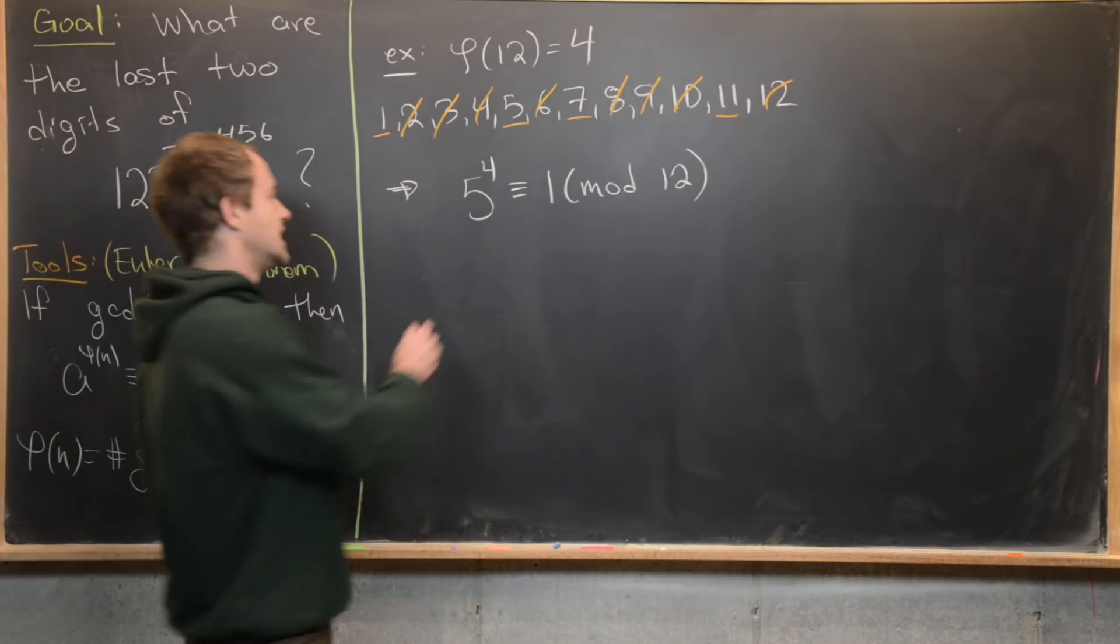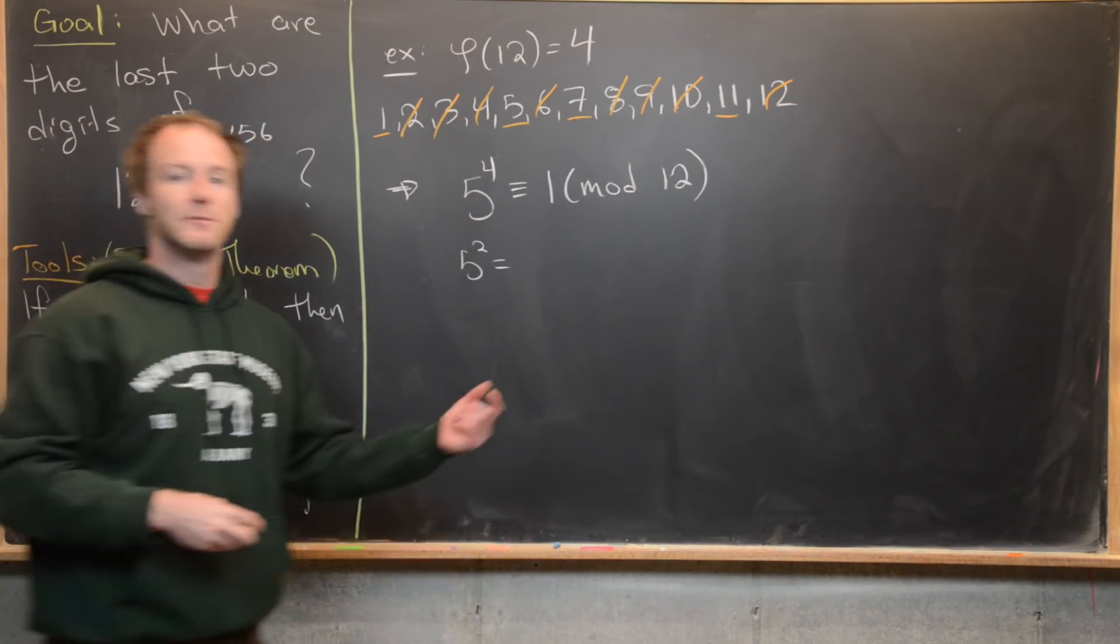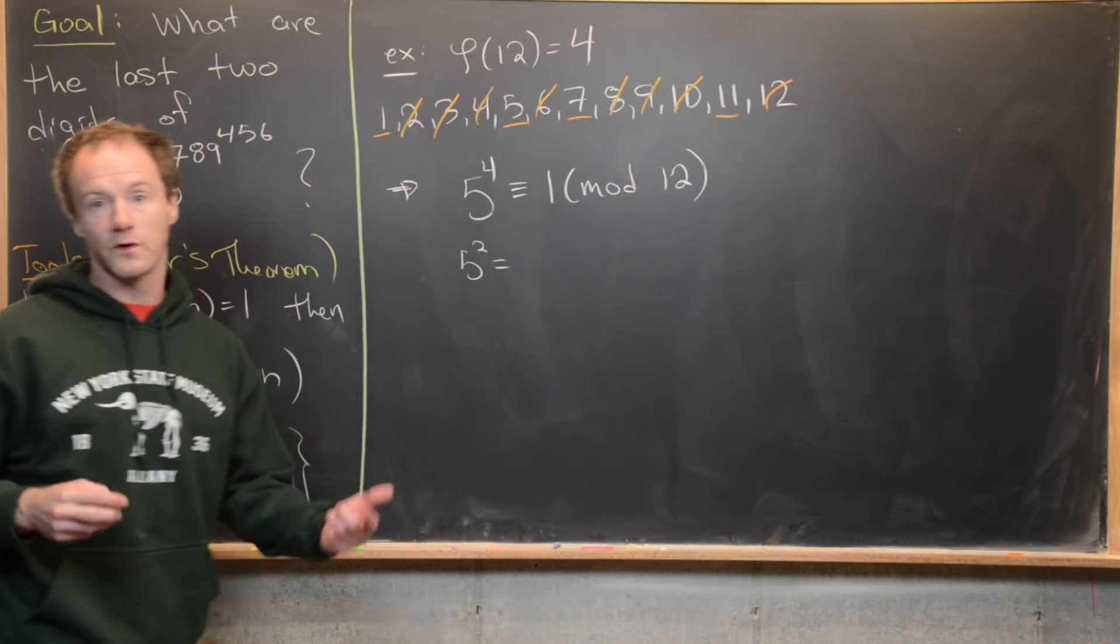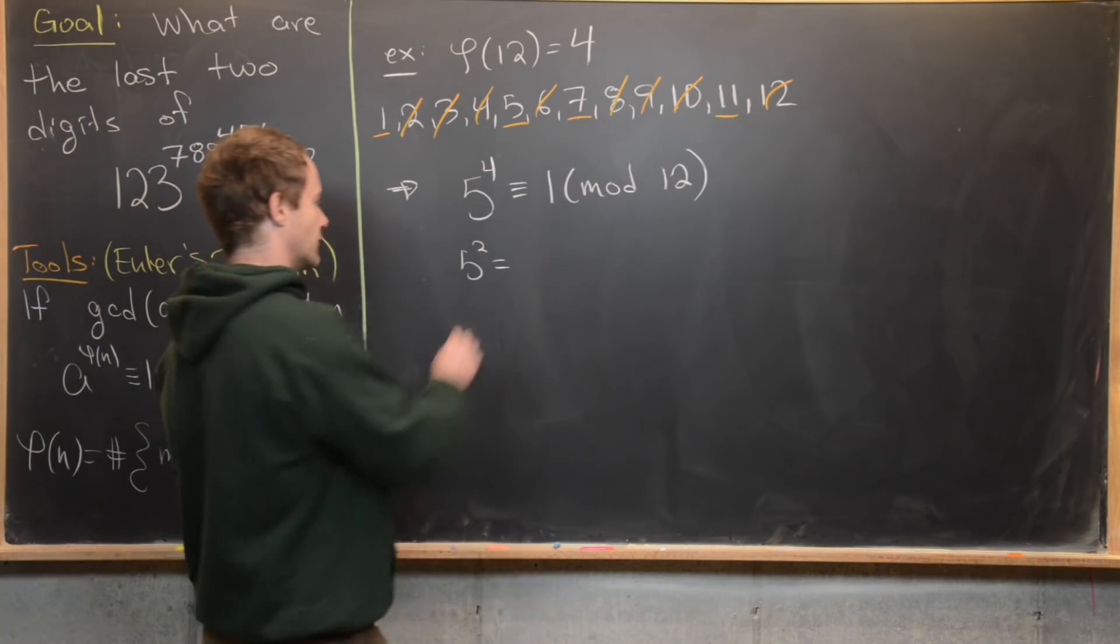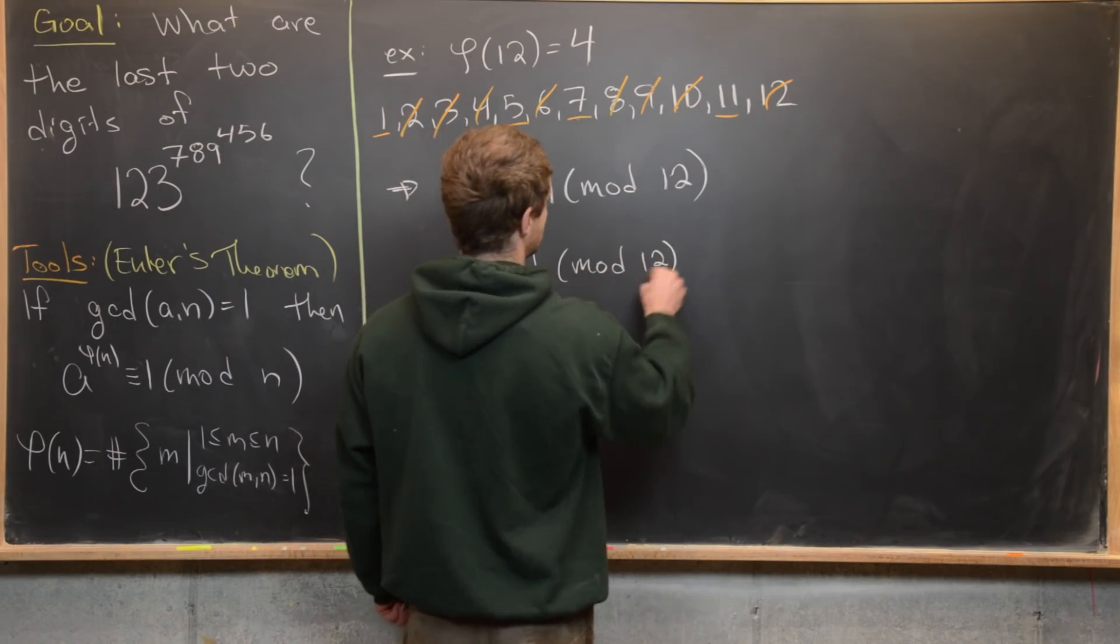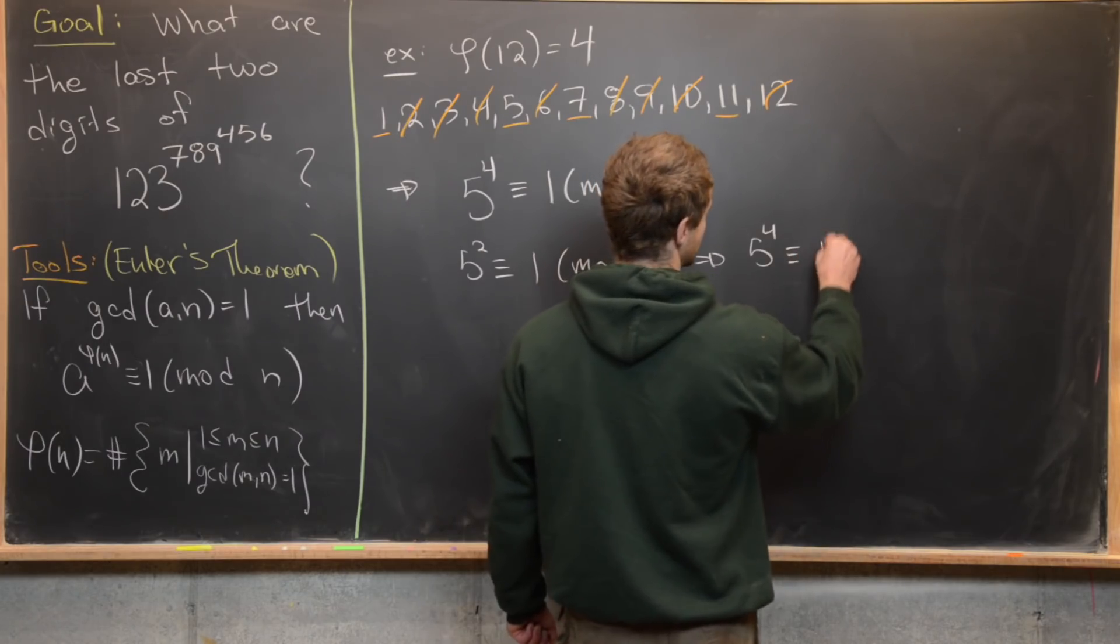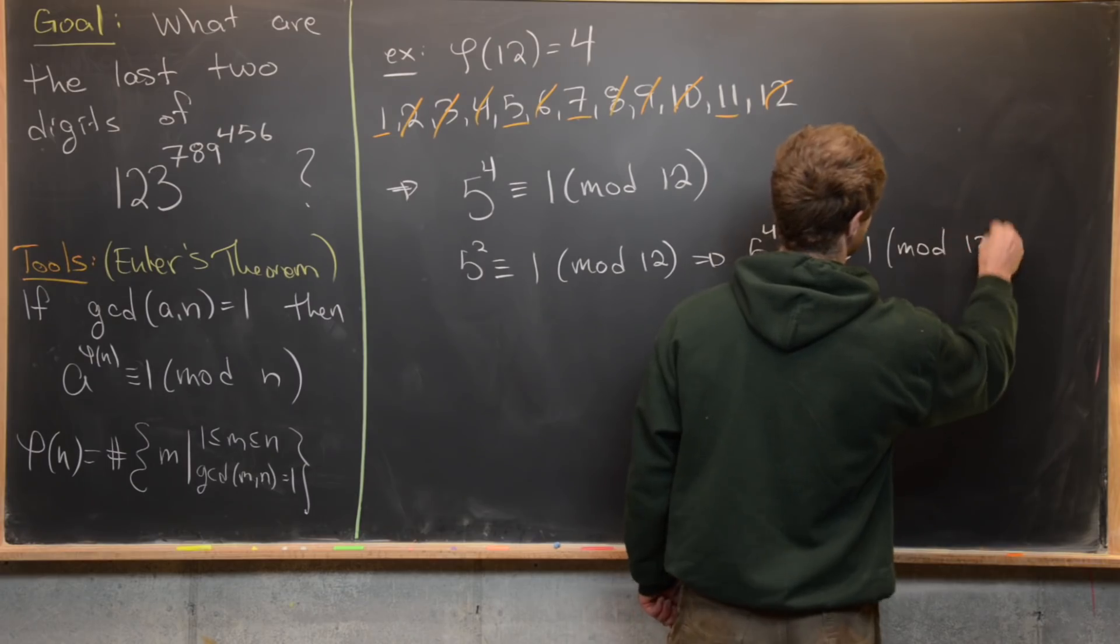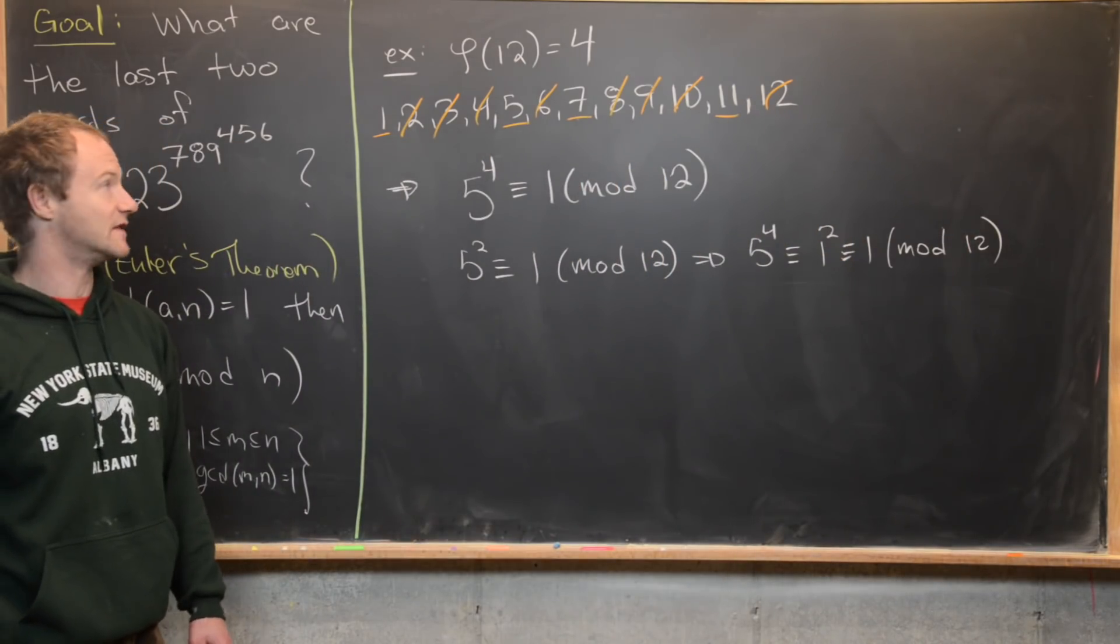If we take 5 squared, 5 squared is 25. But 25 is congruent to 1 mod 12, because it's 1 more than 24. So in other words, if you divide it by 12, you get a remainder of 1. So here we have this is 1 mod 12. But that tells us that 5 to the fourth is going to be congruent to 1 squared, which is congruent to 1 mod 12. So Euler's generalization of Fermat's little theorem checks out in this case.